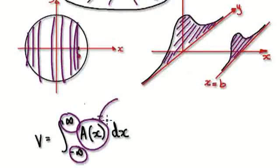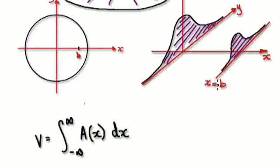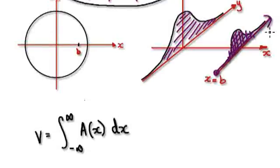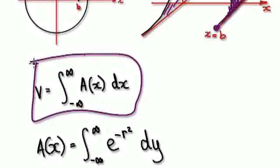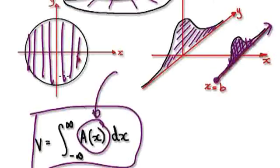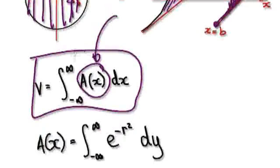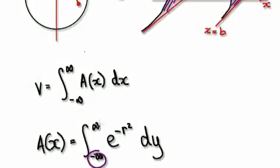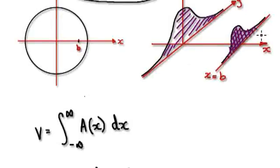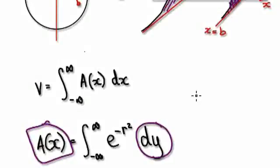But then we need a way of expressing the area for any given value of x. So when x gets to x equals b here, we need a way of obtaining this area. The way we obtain this area is by summing up everything. We are now moving in the y direction, so this here is in the y direction. The volume is given by summing up all the areas, and then we need to find out this area for any given x. The area here is us summing up from negative infinity to positive infinity — we are moving in the y direction.